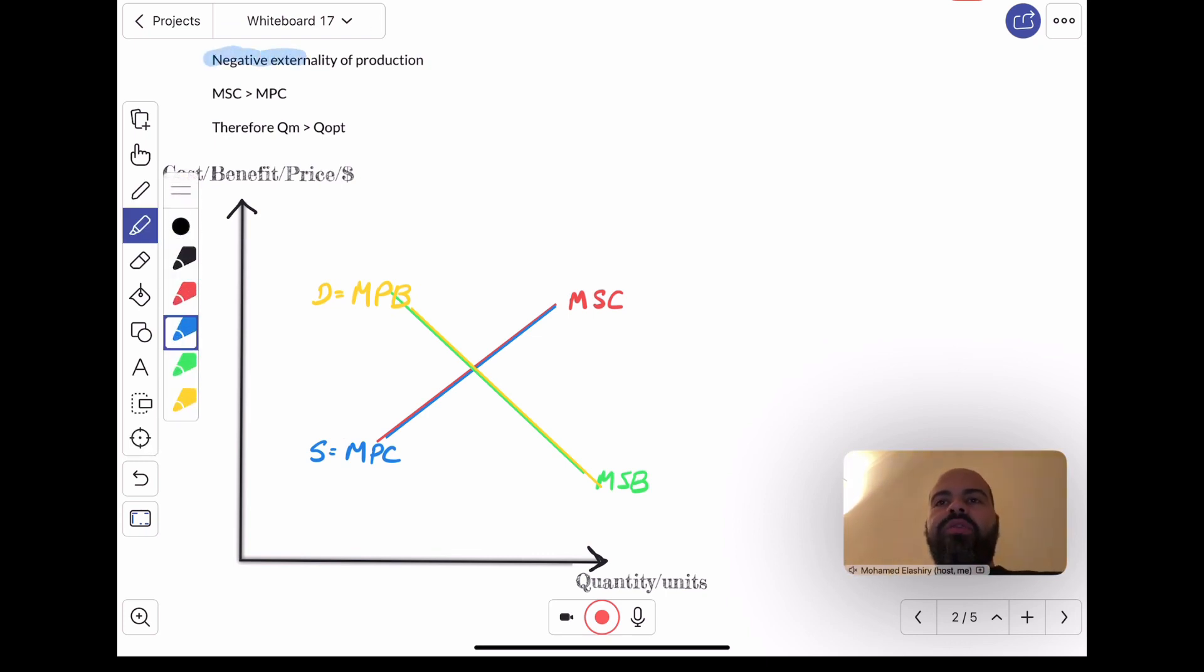What if the production process imposes an external cost on the rest of society? In that case, what's going to happen is that the marginal social costs will be higher than the marginal private cost. So, now you have two different intersections.